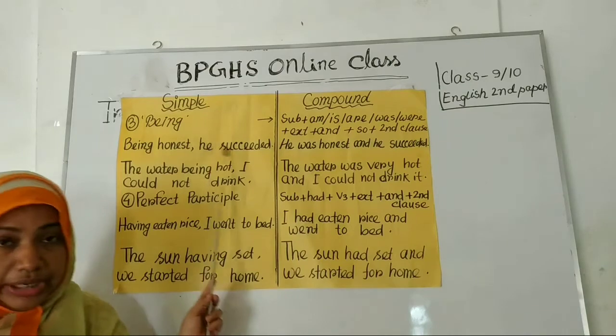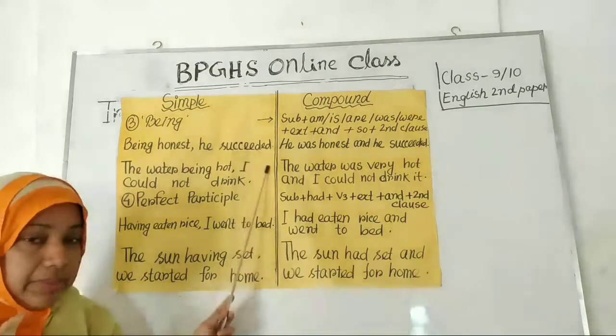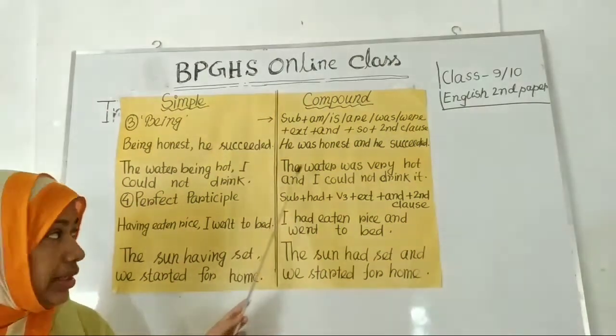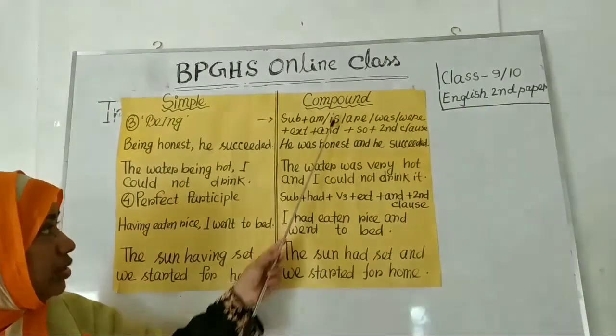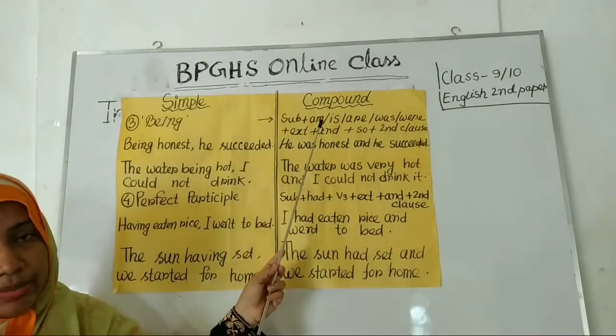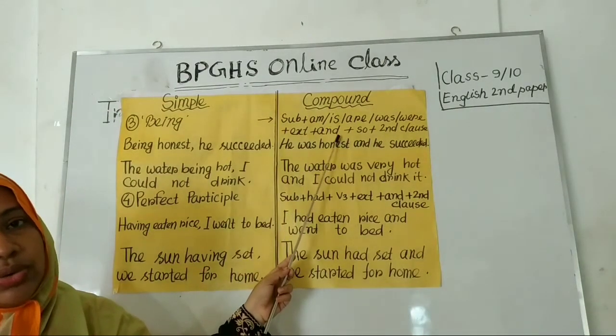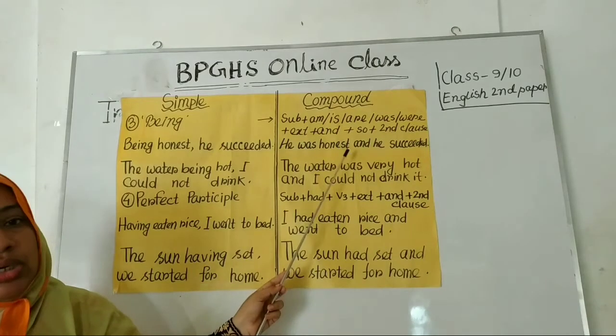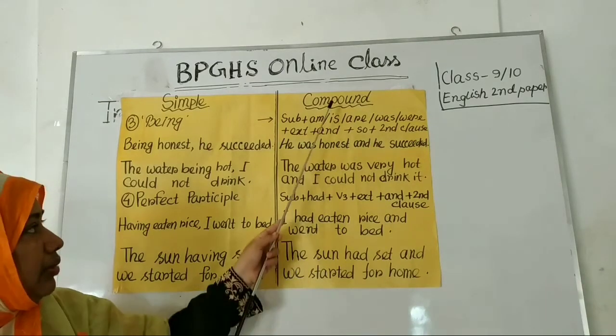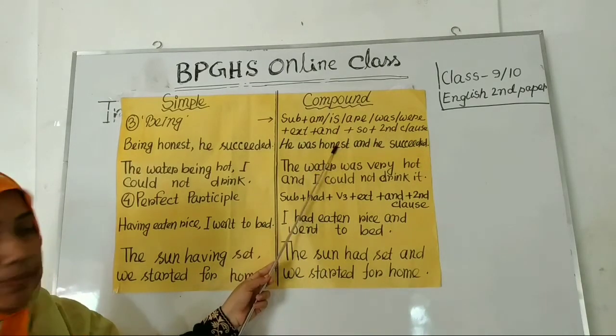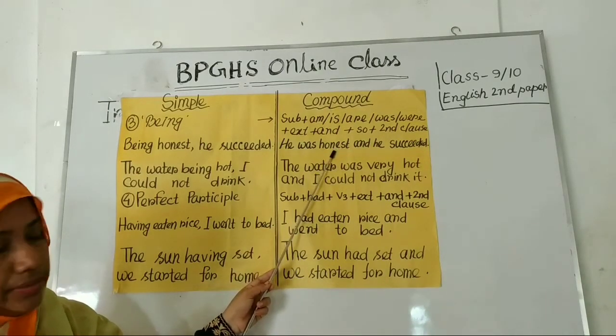So, if you get being in the simple sentence, you will have to take a verb — am, is, are, was, or were — for making the clause.